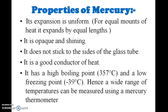Properties of mercury: its expansion is uniform; it is opaque and shiny; it does not stick to the sides of the glass tube; it has good contact with heat; and it has a high boiling point of 357 degrees, compared to water's boiling point of 100 degrees.